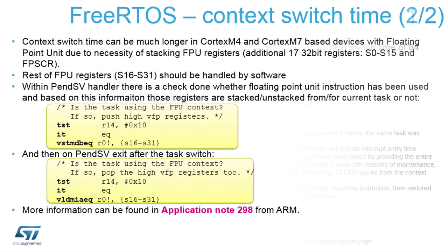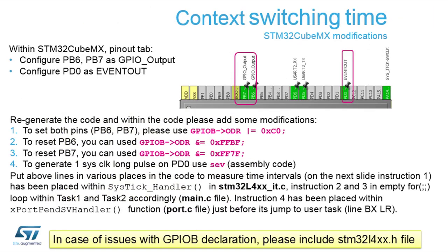For measuring such time, we used GPIO pins — GPIO outputs and an event output. We used these pins as outputs, and to reset and set PB6 we could use these functions. If we want to see a pure glitch — a pure one CPU tick output — we can use the send event (SEV) assembly instruction. This differentiates because such a function will delay the context switch by at least five to six clock cycles, whereas SEV is a one clock cycle instruction.